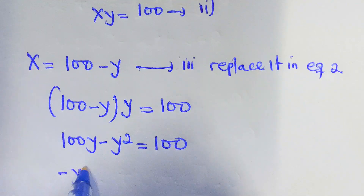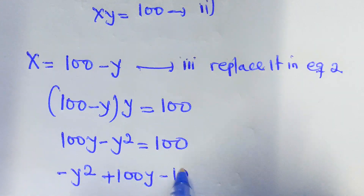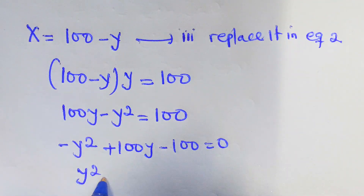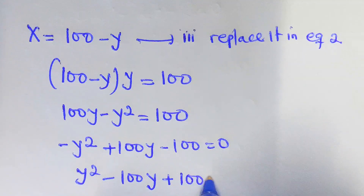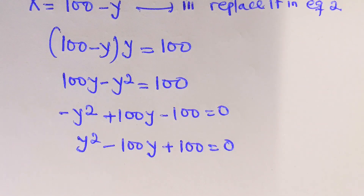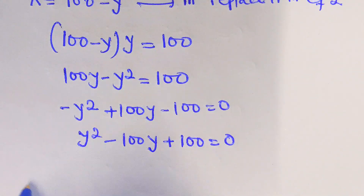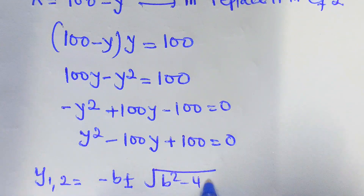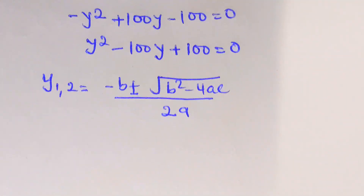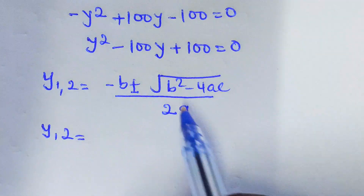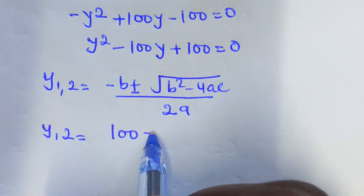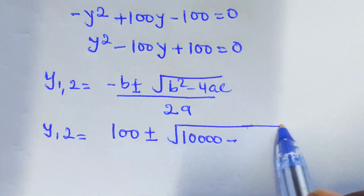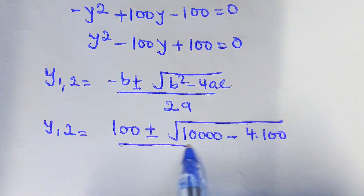By rearranging: negative y squared plus 100y minus 100 equal to 0. And by multiplying both sides by negative one, we shall get y squared minus 100y plus 100 equal to 0. Of course this is a quadratic equation. We have to find y1 and y2, using the quadratic formula: y equals negative b plus or minus square root of b squared minus 4ac, over 2a.